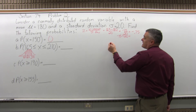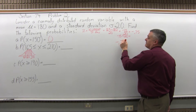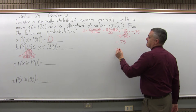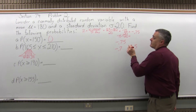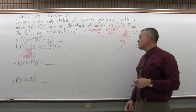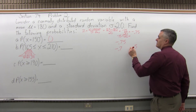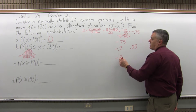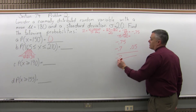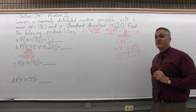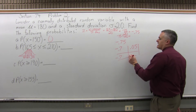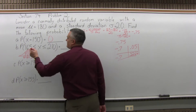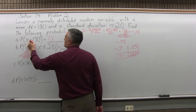To look up negative 0.75 in the chart: write it with two decimal places (already done), then split into two parts by pulling off the rightmost digit — negative 0.7 and 0.05. Go to the negative 0.7 row and intersect with the 0.05 column. They intersect at 0.2266. That is the chart value for 165.